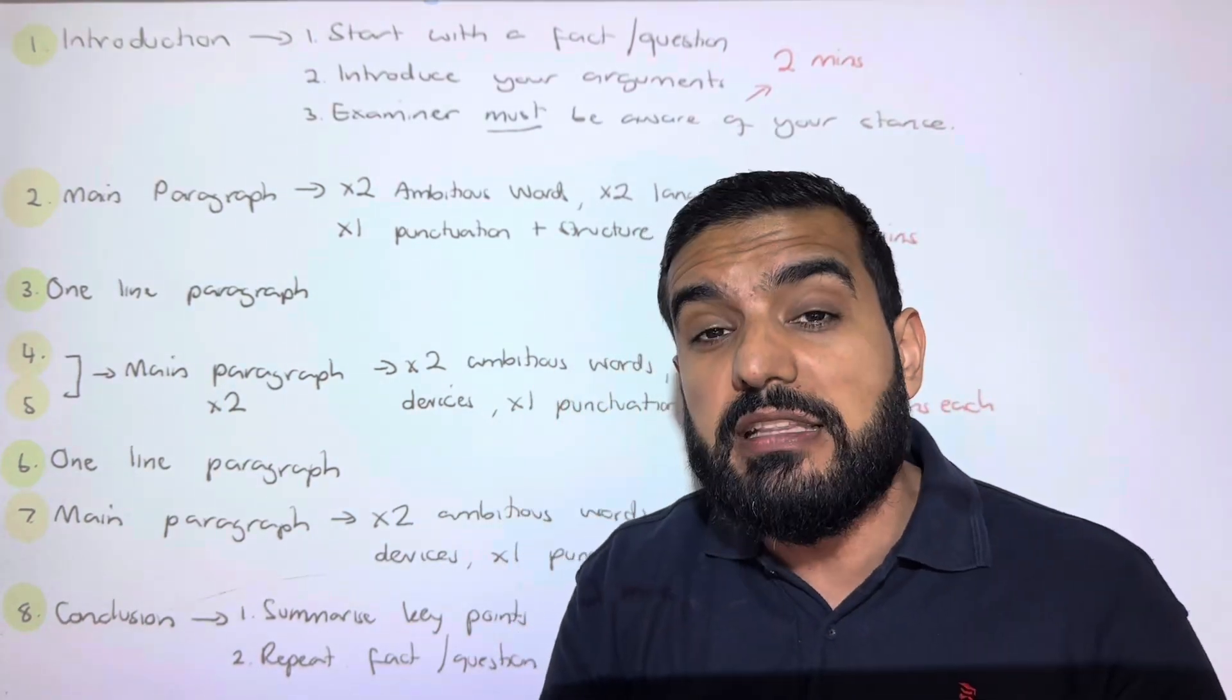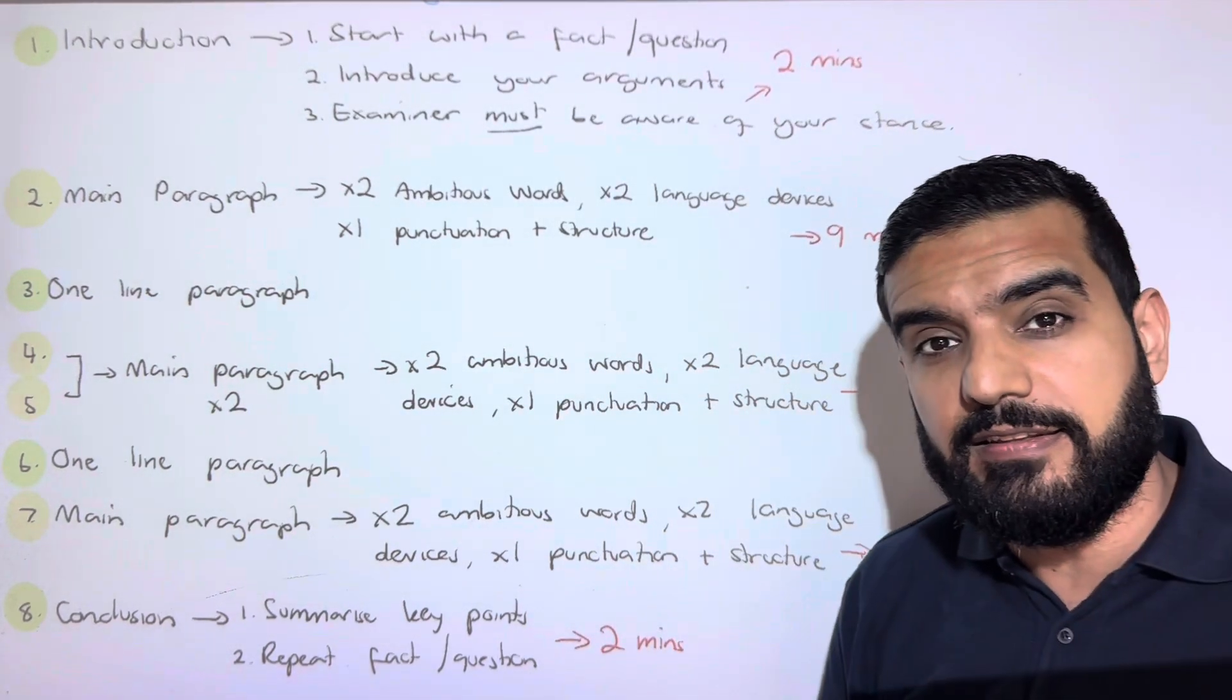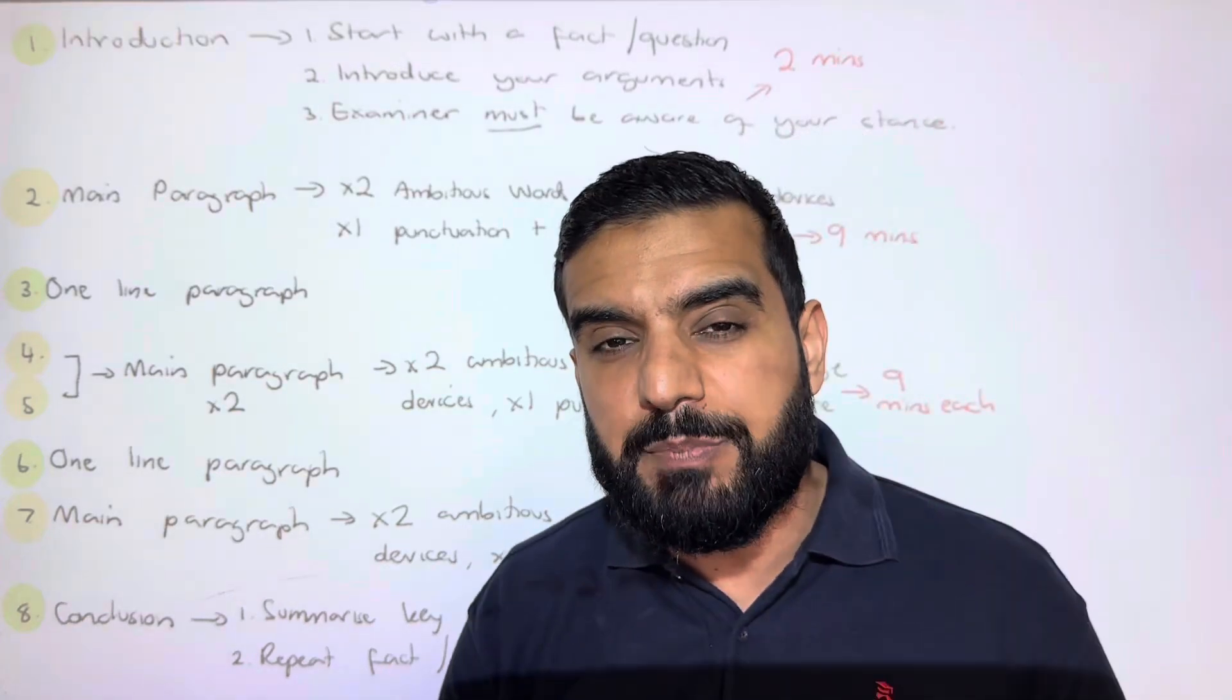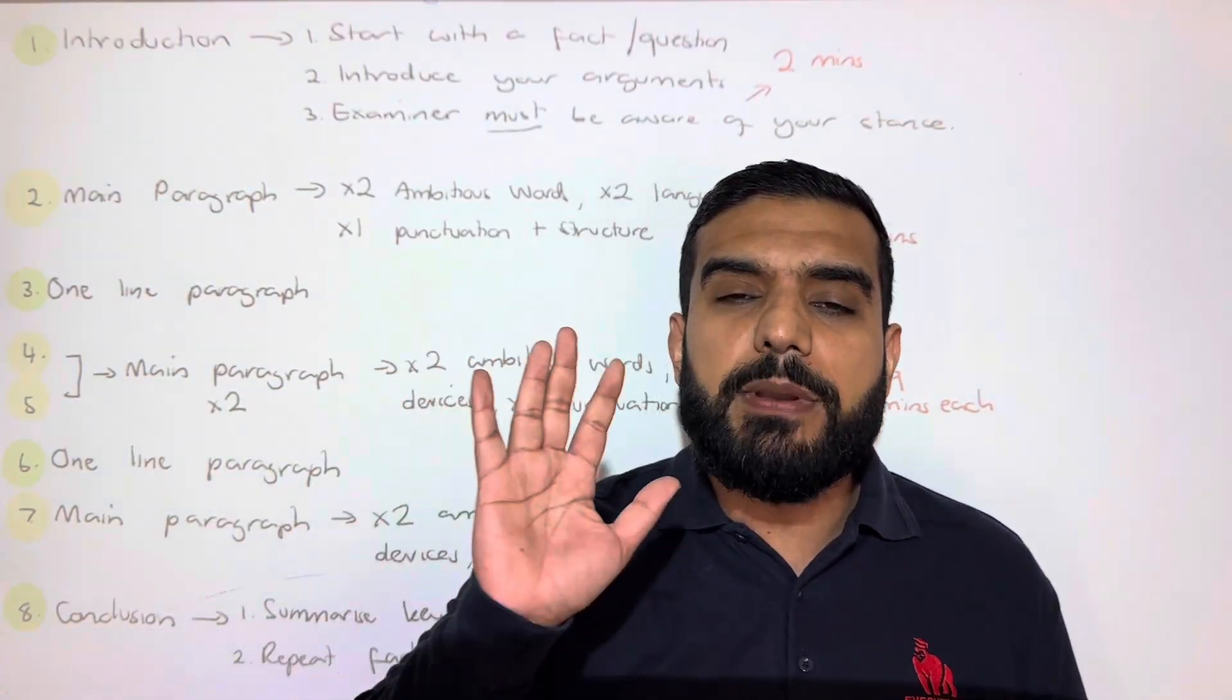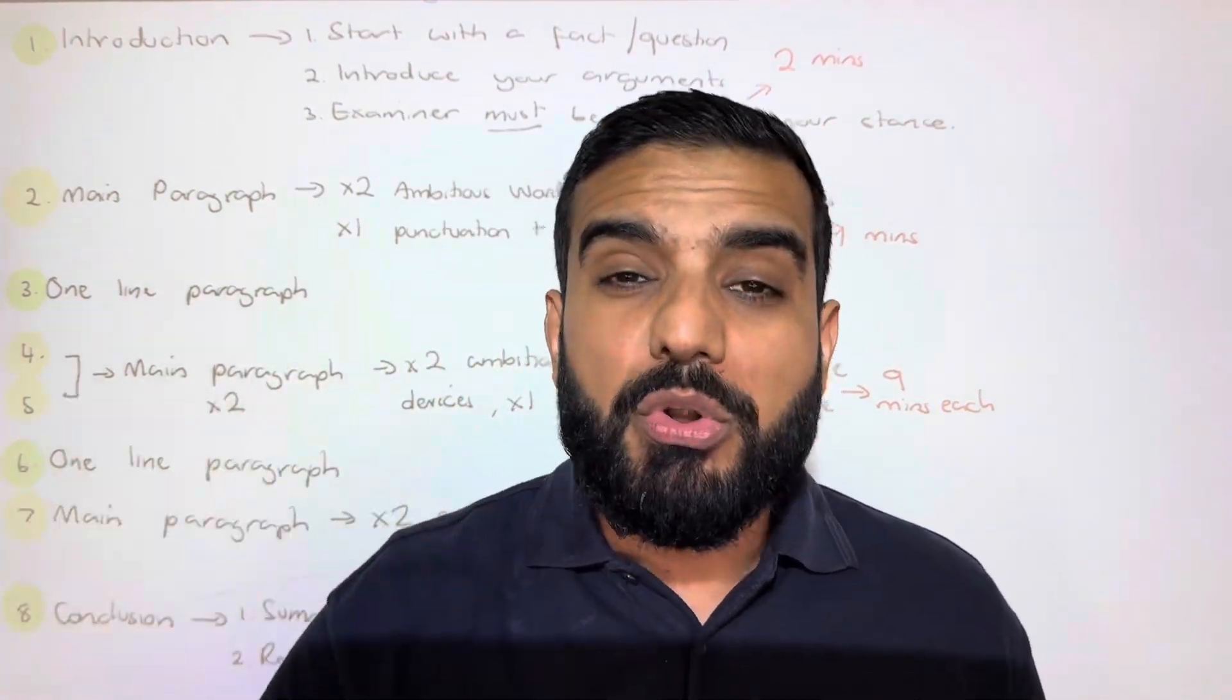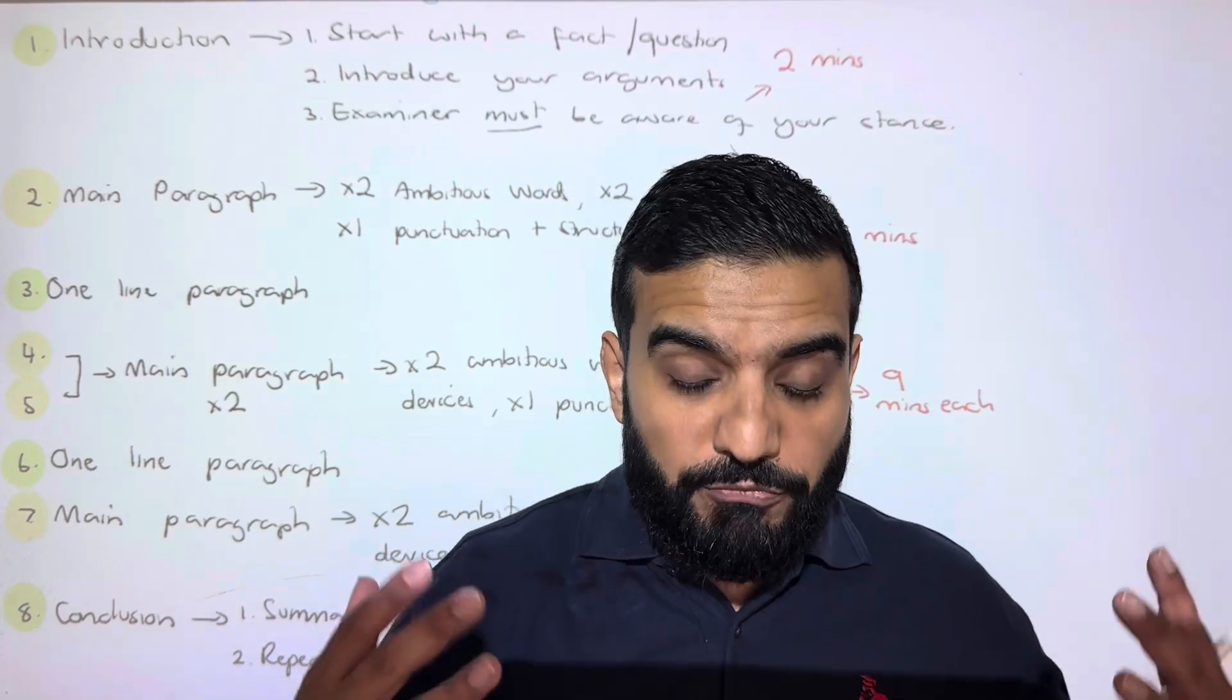The other four are chunky—these are the ones where we present our argument. So nine times four is 36, then you do a two-minute intro, two-minute conclusion, that's 40. 40 minutes is what we're spending writing in this question, and we have five minutes to plan. Now you might be wondering, sir, how in the world am I going to plan all of that in five minutes? Because, guys, we are going to pre-plan half of it right now before our GCSE begins.